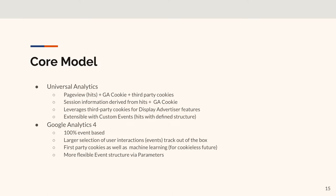Google Analytics 4 is 100% event-based with a larger selection of user interactions tracked out of the box. For example, Universal Analytics by default does not track file downloads - if you have PDFs on your site you'd have to configure a custom event, looking for clicks on links with a file extension in the URL. It's a bit hacky. But out of the box, file downloads are tracked by Google Analytics 4. Under the hood they're probably doing the same thing, but you don't have to muck around with regex for file extensions.